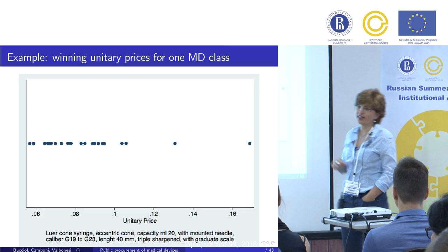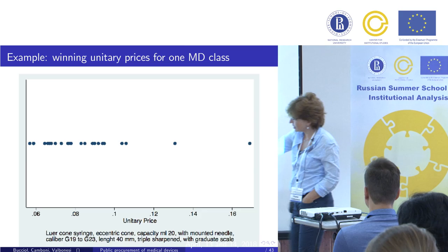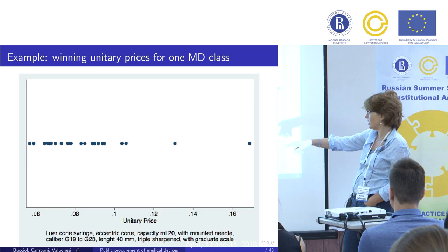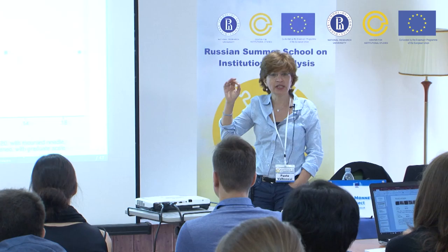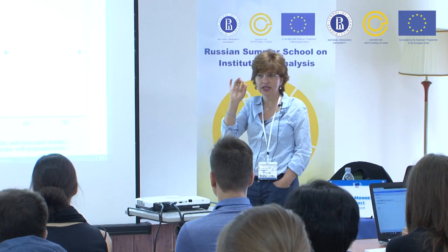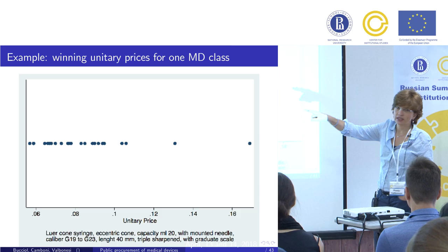Looking at the data, this slide shows the winning unitary prices for one medical device class: a Luer-con syringe, eccentric, one-capacity milliliter 20, with a moated needle caliber G19 to G23, length 40 millimeters. As you can see, these are standard goods but with very strong precision in specification. There is a significant dispersion in the prices paid for this same good across different hospitals, and that is exactly what we are trying to investigate.